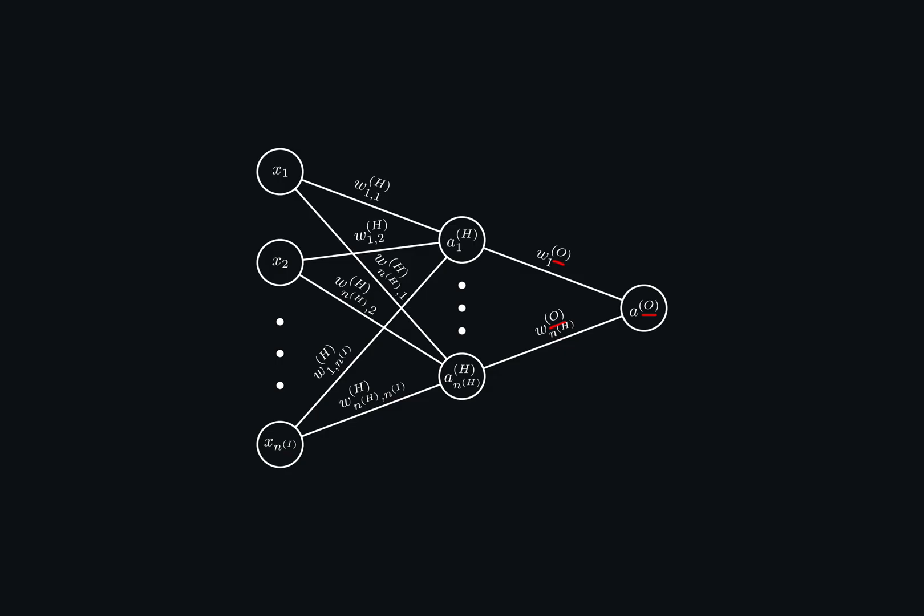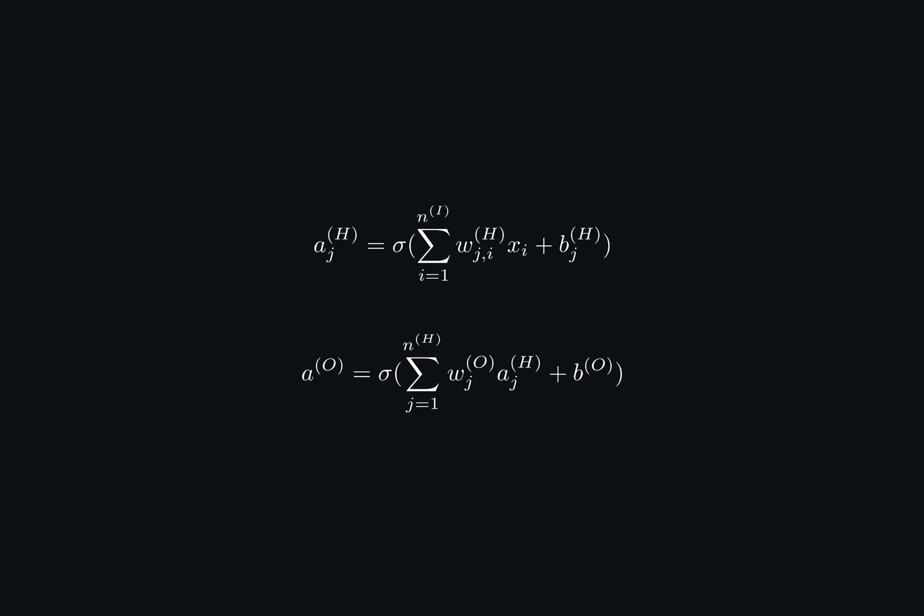Now, the same idea is applied to the output layer O, but it has fewer indices, because it comprises a single output neuron. Let's write down all the formulas to calculate neuron values at each level. Make sure you pause here for some time and fully understand the notations.